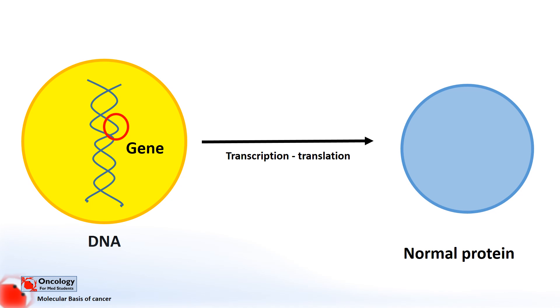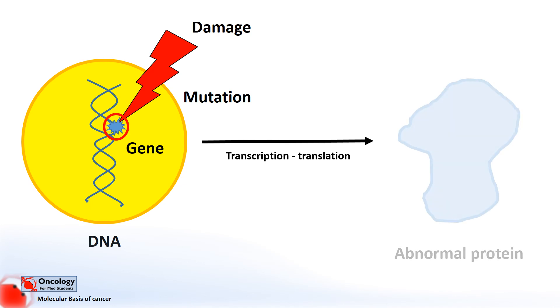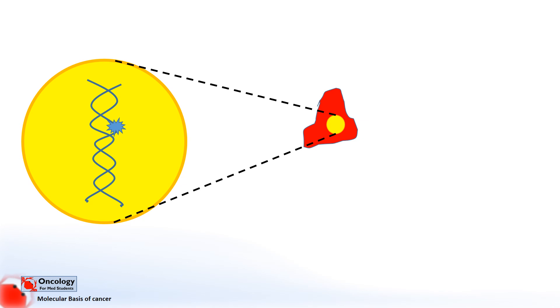So what happens when genes — or the code for a protein — gets damaged? Something that damages the DNA of a cell permanently changes the structure of the gene, the recipe for the proteins, and that cell goes on to produce a faulty protein. The damage that occurs to the gene is known as a mutation. This leads to the cell producing an abnormal protein that will function in a different way, and as we just said, a change in a protein means a change in what the cell does. The change to the gene — the mutation — is then passed on from the original cell to all of its daughter cells.